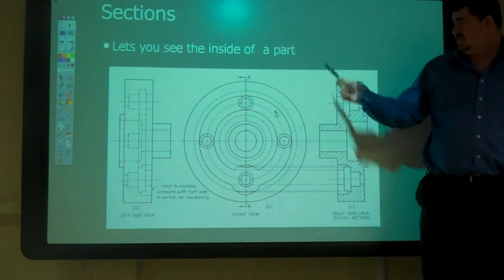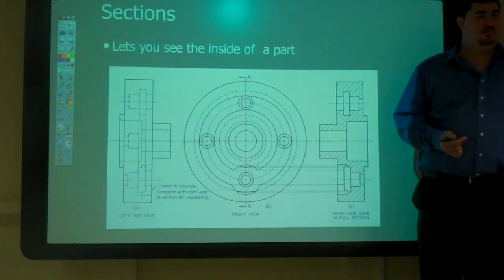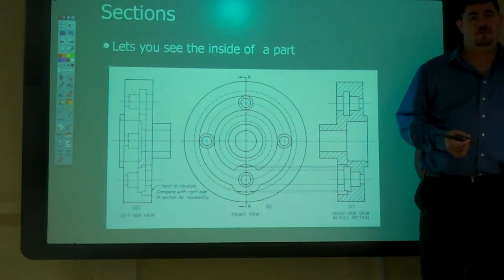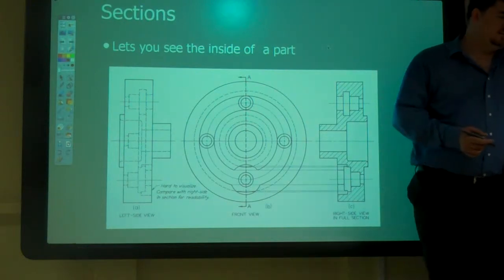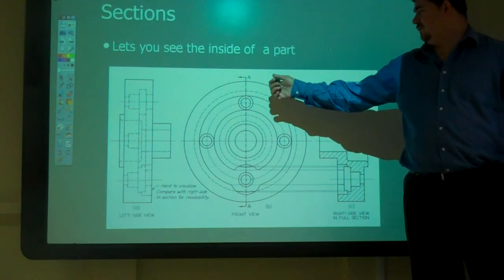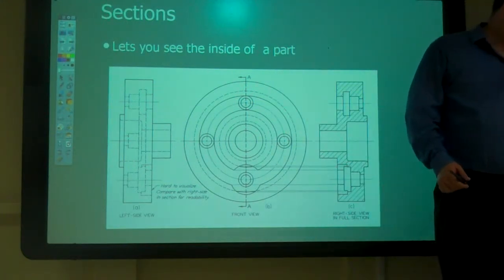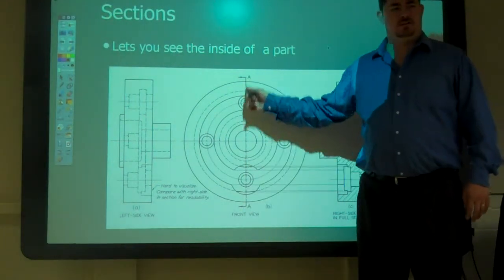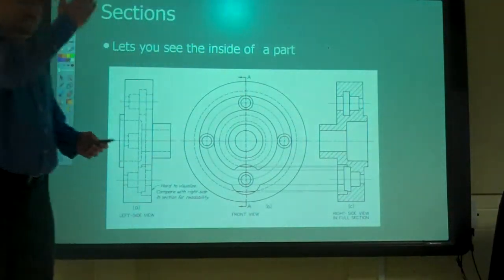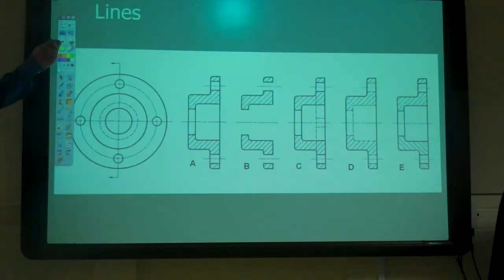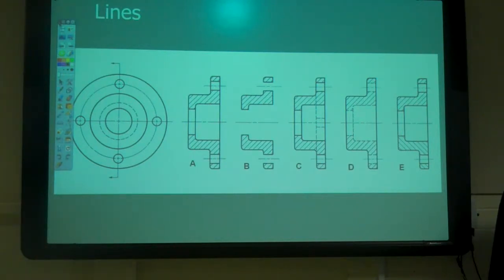What about the front view — what's different about that? This cutting plane line tells us where we're going to cut it. That's showing us where we're cutting — that's where the section is at. So which one of these is correct?